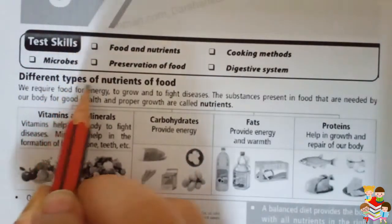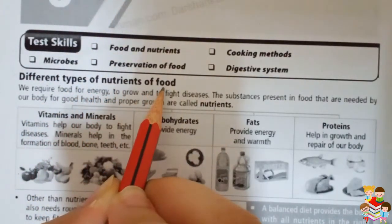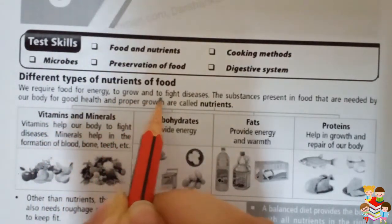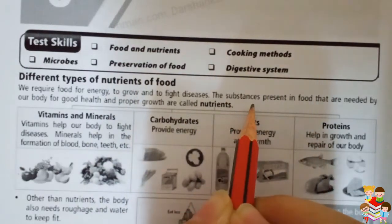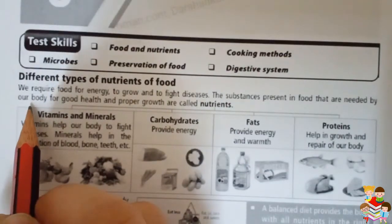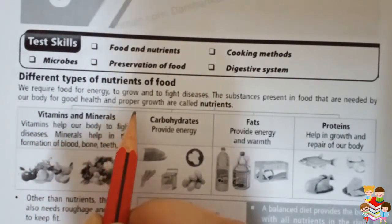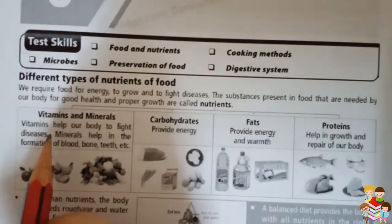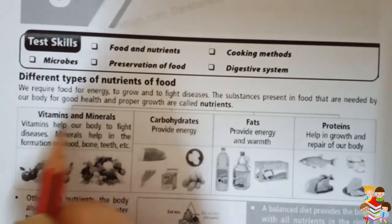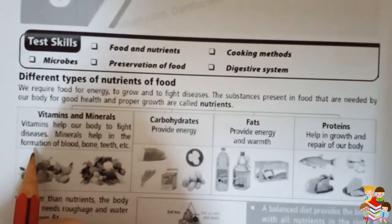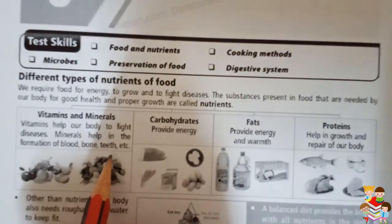Different types of nutrition of food. We require food for energy, to grow, and to fight diseases. The substances present in the food that are needed by our body for good health and proper growth are called nutritions. Vitamins help our body to fight diseases. Minerals help in the formation of blood, bone, teeth, etc.